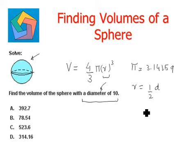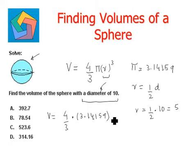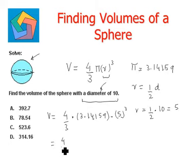So we will find the radius, which is half of the diameter. Diameter is given as 10, so half times 10 equals 5. We now use the formula 4/3 × 3.14159 × 5³. Since 5 cubed is 125, we write this as 4/3 × 3.14159 × 125.